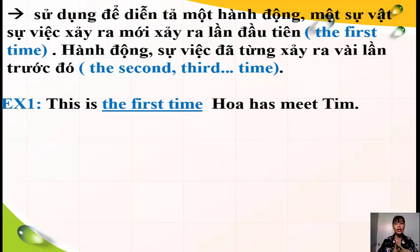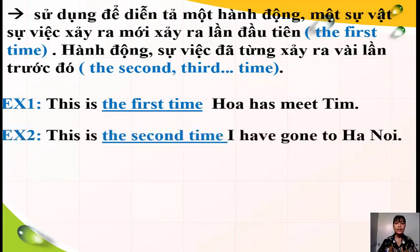Ví dụ: Đây là lần đầu tiên bạn Hoa được gặp bạn Tím. Hoặc: Đây là lần thứ 2 tôi đã được đi đến Hà Nội. Đó là 2 cách sử dụng của thì hiện tại hoàn thành.